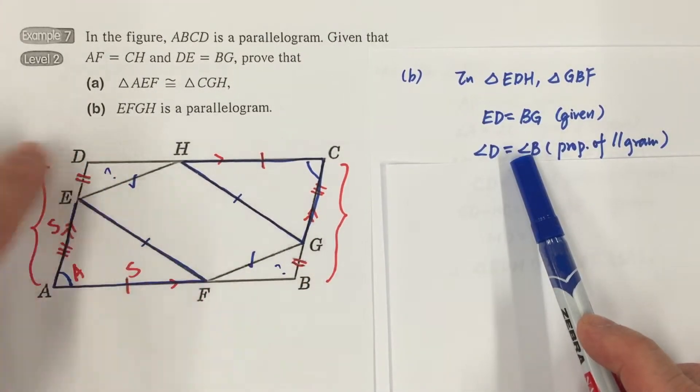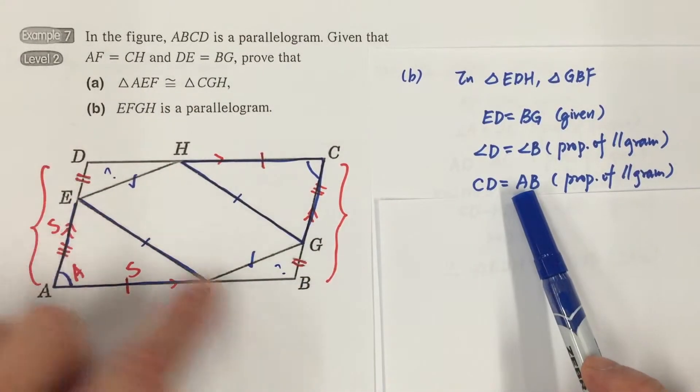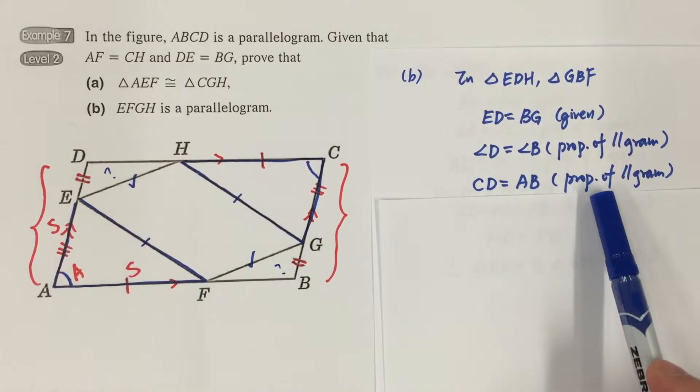Angle B, angle D, they are equal because of the properties of parallelogram. CD equals AB, properties of parallelogram.